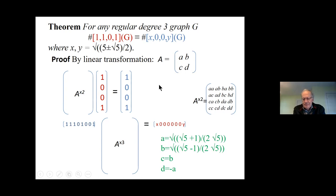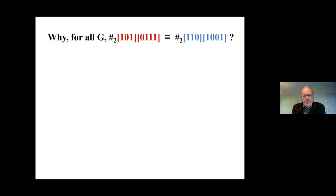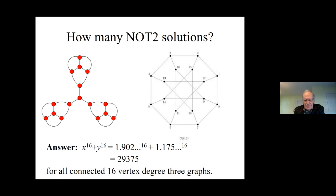Let me give another example showing equivalences of problems that look different but are the same functions. Going back to more Boolean things: conjunctive normal form, where I want to know if at least one of three variables is true. Independent set is a graph theory problem where I choose a set of vertices so that no two chosen vertices are connected. These two well-known problems — Boolean satisfiability and independent set — can be compared by counting their solutions.